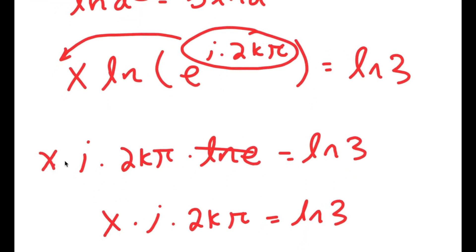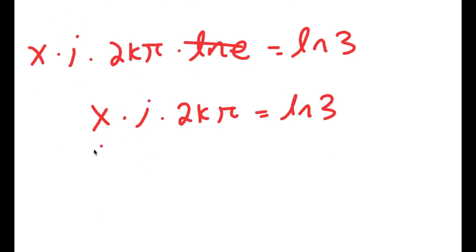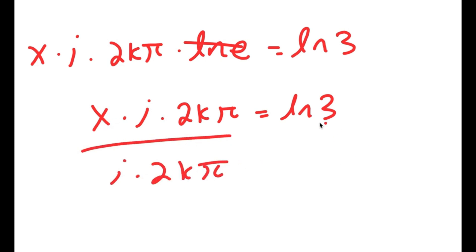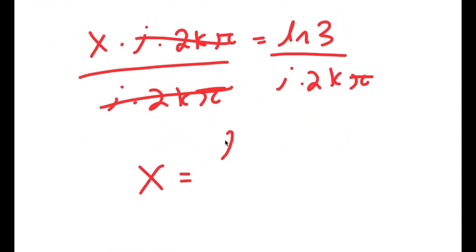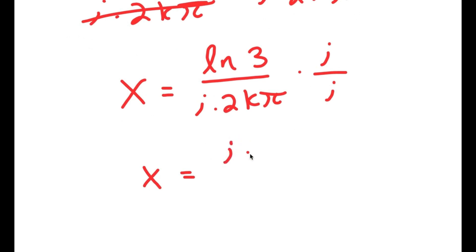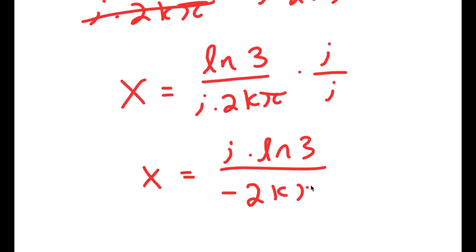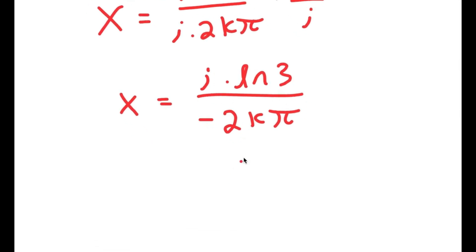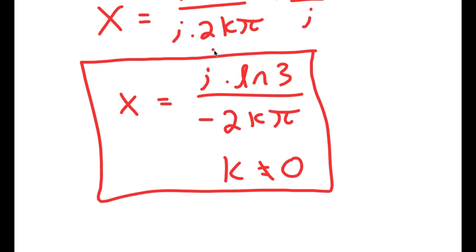Dividing both sides by i times 2k pi, I get x equals ln 3 over (i times 2k pi). To simplify, I multiply by i over i — which equals 1 — giving x equals i times ln 3 over i squared times 2k pi. Since i squared equals negative 1, this becomes x equals negative i times ln 3 over 2k pi, where k cannot equal 0 (otherwise we'd be dividing by zero). That is the solution to this equation.